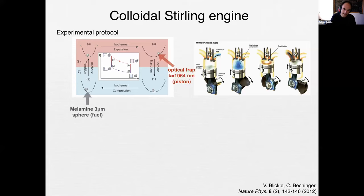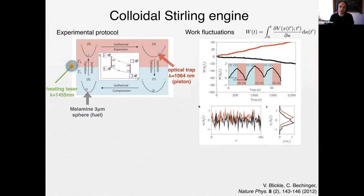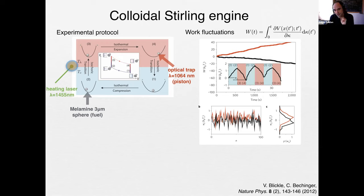The Blickinger group implemented this as follows: the working substance is a microscopic melamine particle of three microns diameter. The cylinder or piston is an optical trap that can be opened and closed — compressing or expanding the one-particle gas. The surrounding fluid, water, can be heated with a heating laser of 1455 nm wavelength. Following this, you can repeat this cycle many times and measure the work.